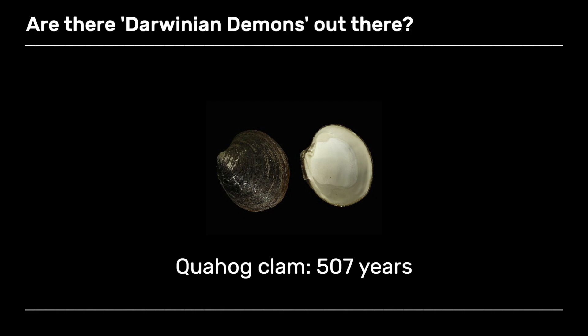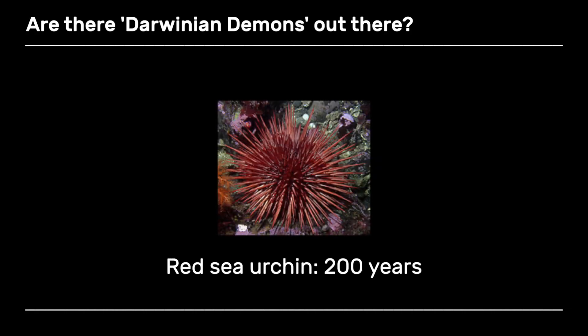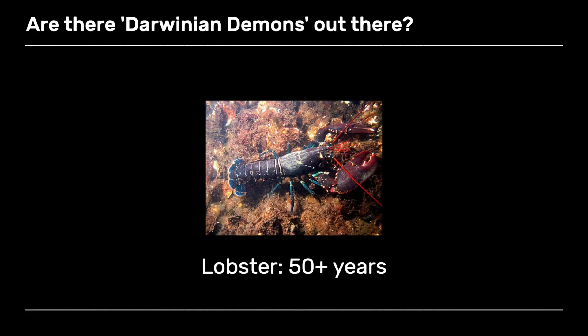People have been trying to find organisms that do not age or are immortal. The record has been a clam living for 507 years in the deep sea. Sea urchins are up there as well at 200 years. Lobsters can live for more than 50 years. But none of them are immortal, and all of them have their fitness decaying with age — they senesce just like we humans do. So why don't we live forever? Shouldn't natural selection increase our fitness by favoring individuals that survive for longer, evolving ever more long-lived species?